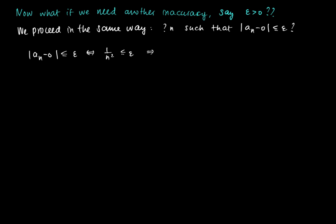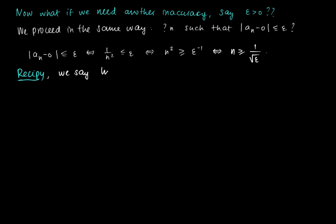With the general term epsilon, solving |a_n - 0| ≤ epsilon is equivalent to 1/n² ≤ epsilon, or n² ≥ 1/epsilon, or n ≥ 1/√epsilon. For a given epsilon > 0, this provides a recipe: we can find n satisfying this condition, and therefore we say the limit as n → ∞ of a_n equals 0, since a_n can be made smaller than any given inaccuracy.